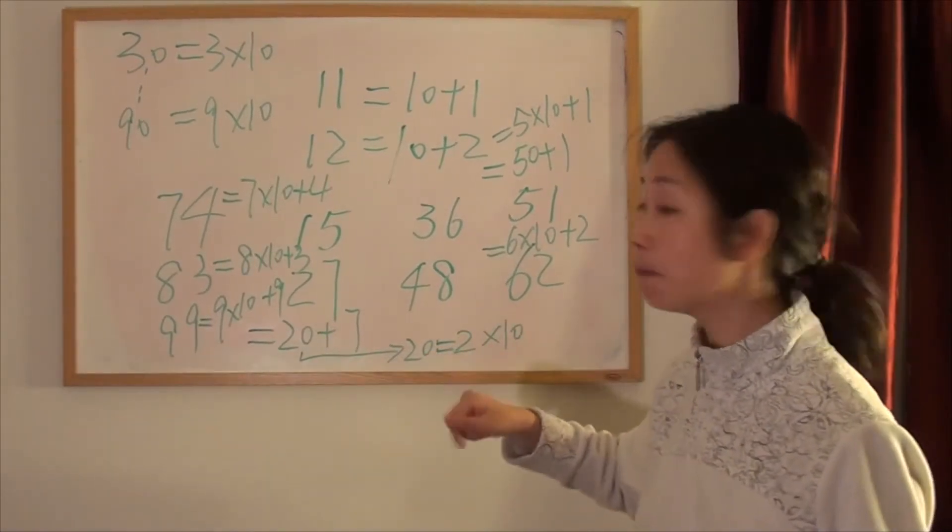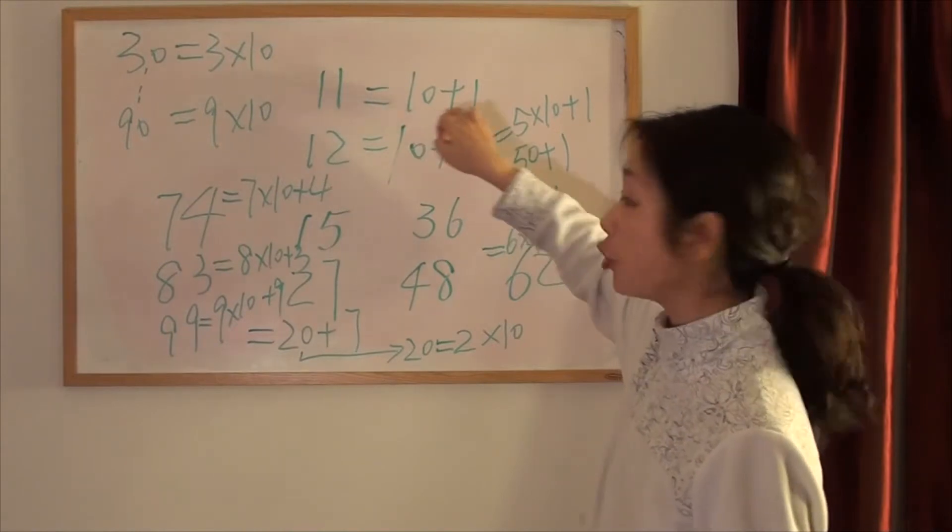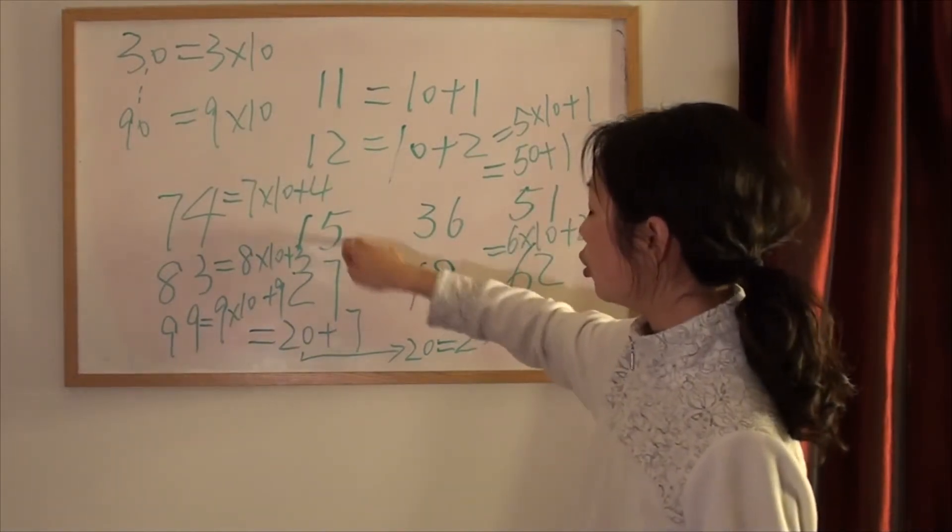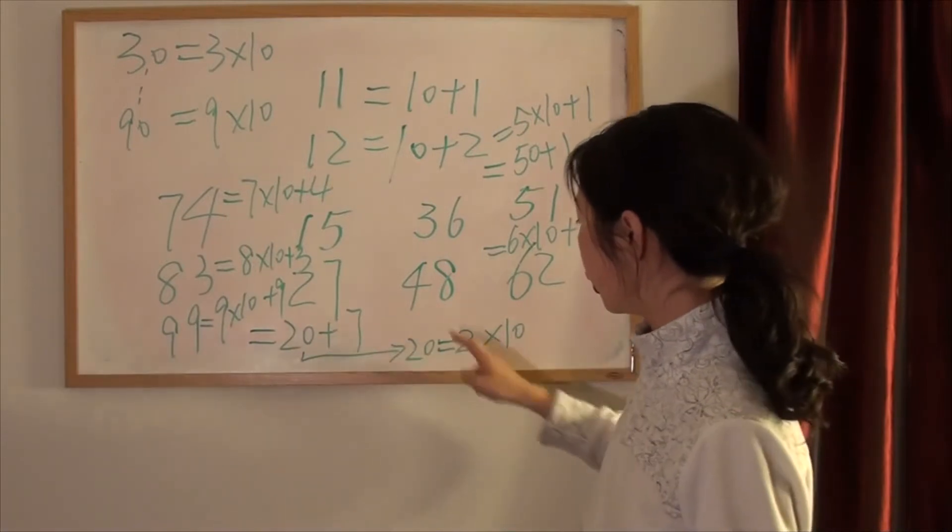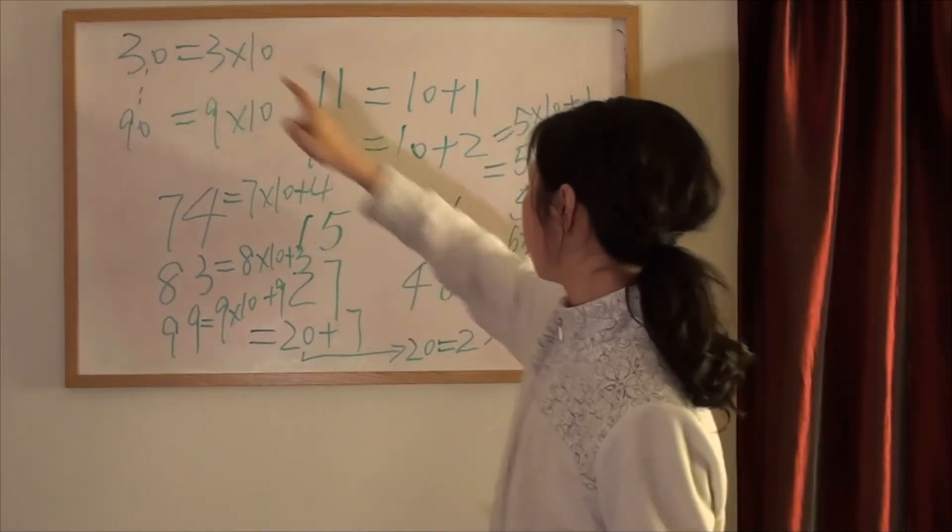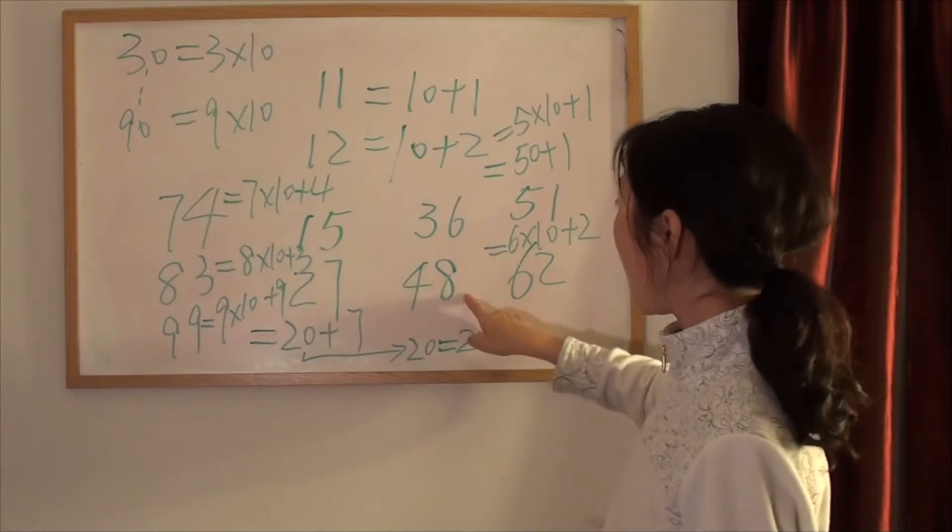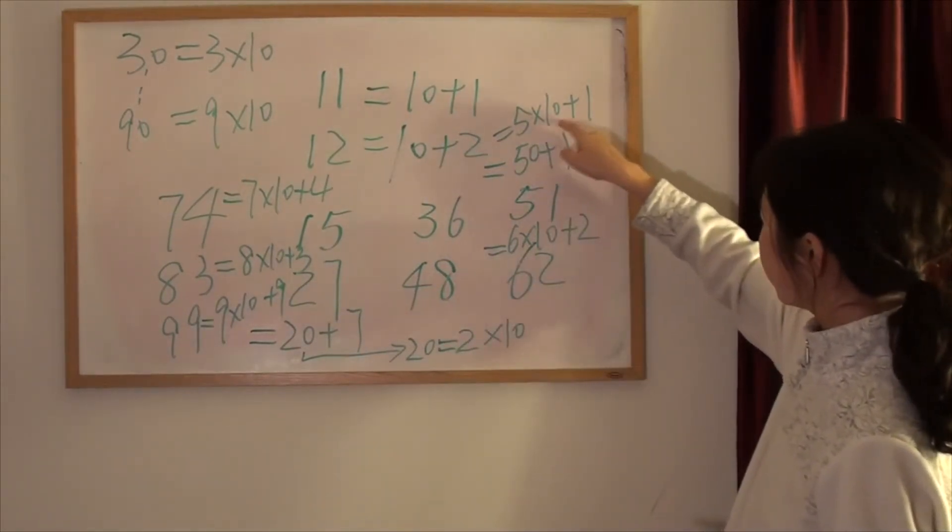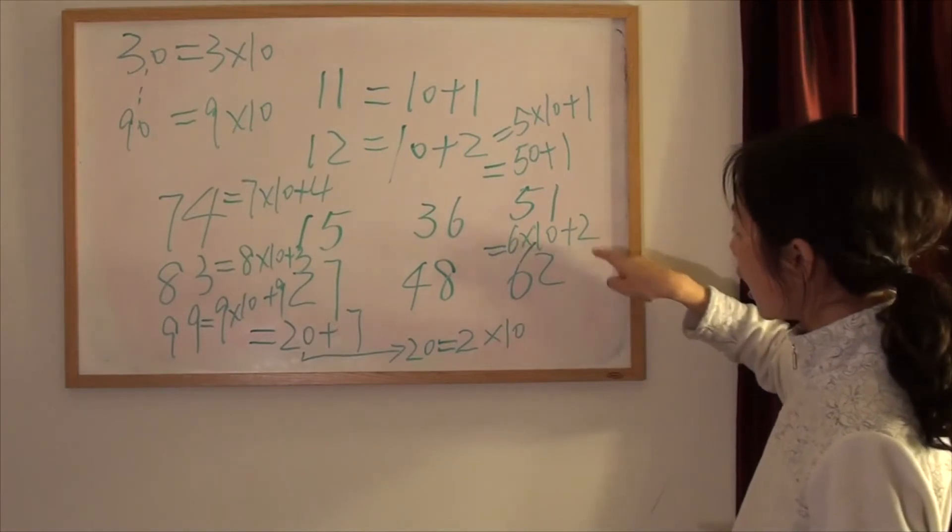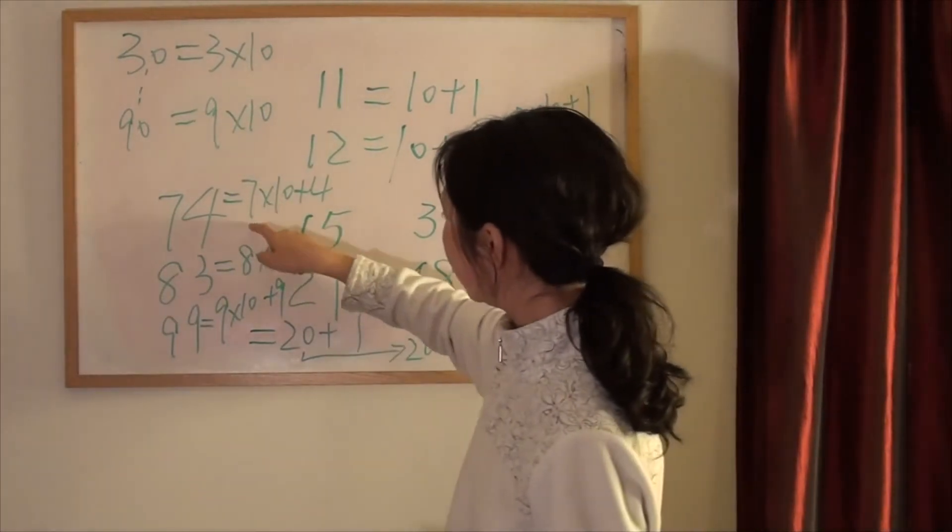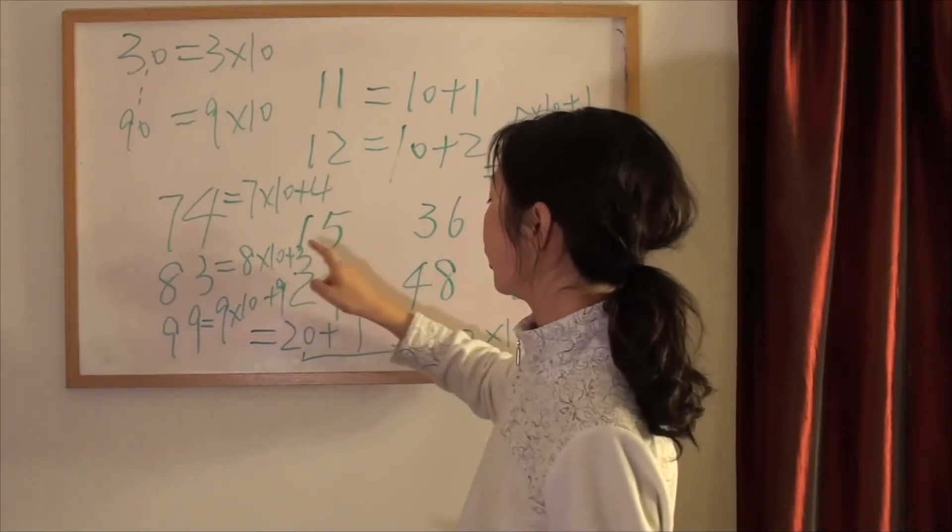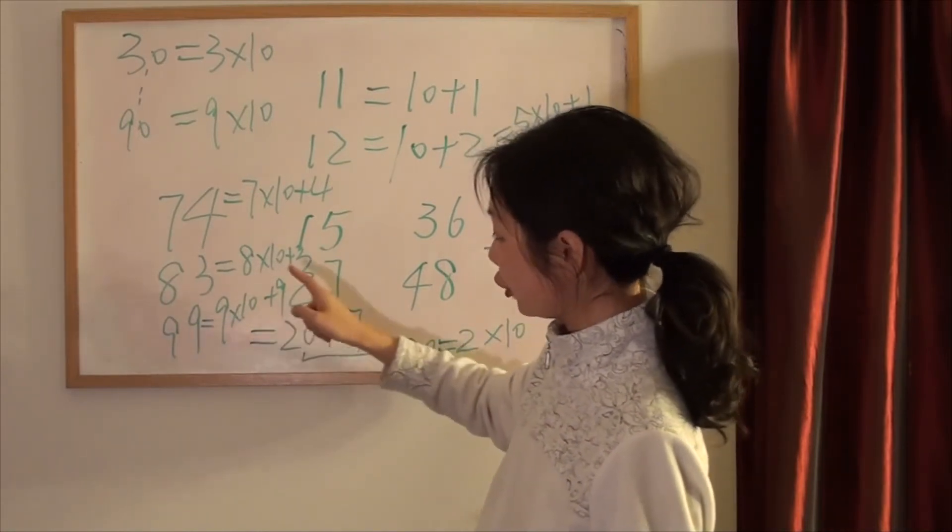Ok, let's read them together one more time. 十一, 十一, 十二, 十二, 十五, 二, 二十七, 二十七, 三十六, 三十六, 四十八, 四十八, 五十一, 五十一, 六十二, 六十二, 七十四, 七十四, 八十三, 八十三, 九十九, 九十九, clear?